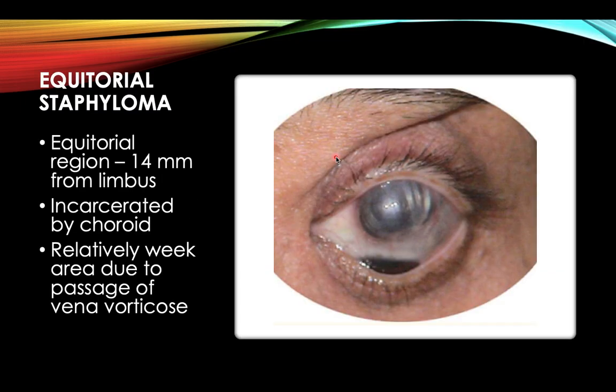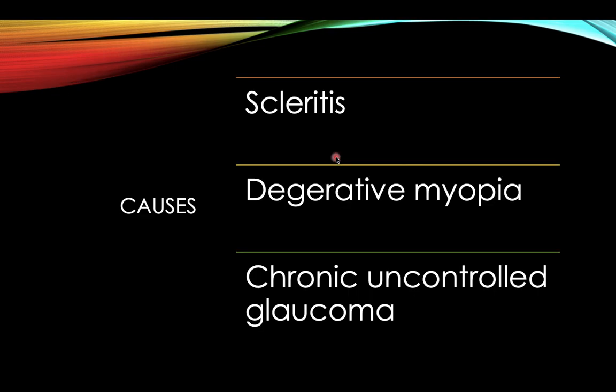The fourth type is equatorial staphyloma, involving the equatorial region about 14 millimeters from the limbus, incarcerated by the choroid. This is a relatively weak area due to the passage of vena vorticosa. Causes include scleritis, degenerative myopia, and chronic uncontrolled glaucoma.